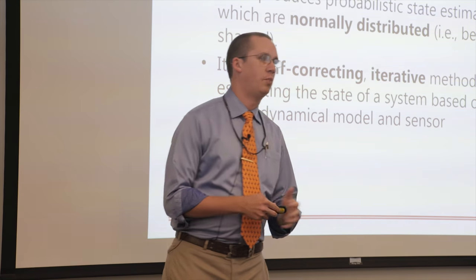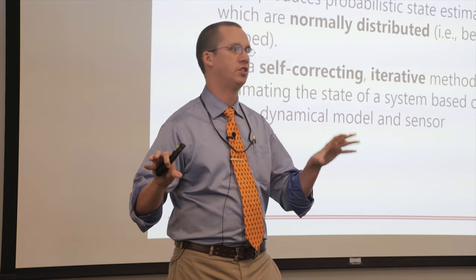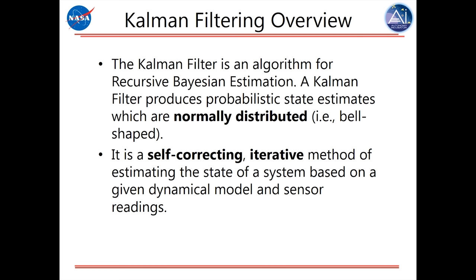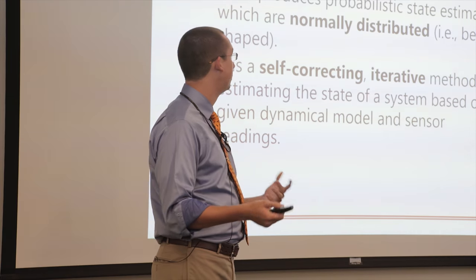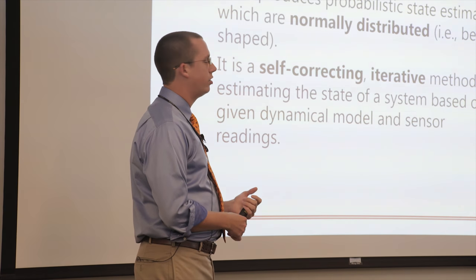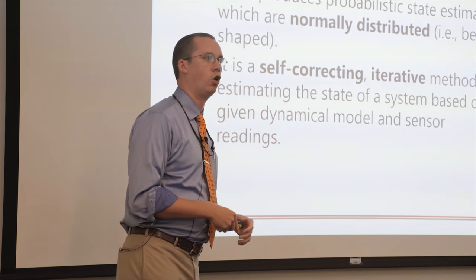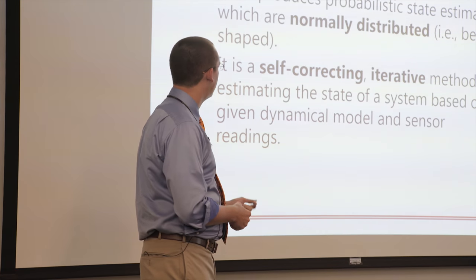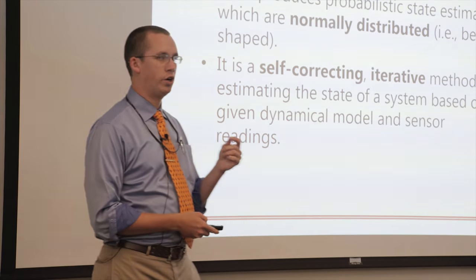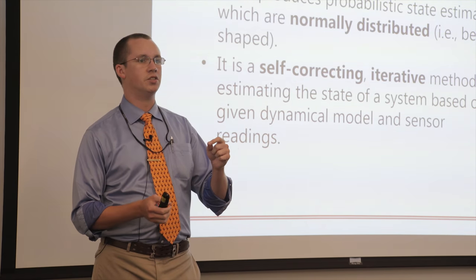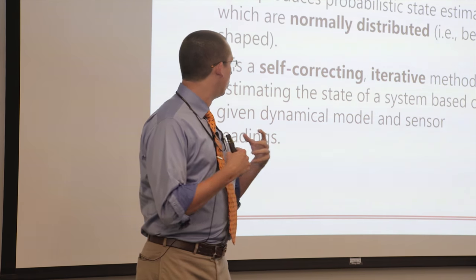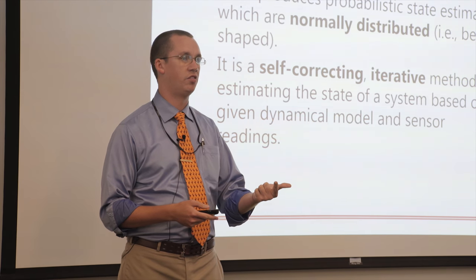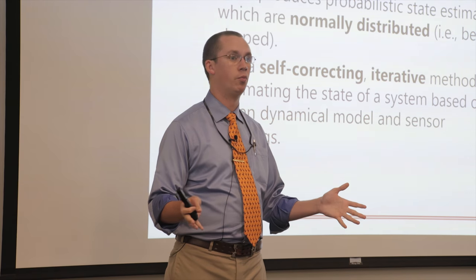Kalman filtering. I mentioned Kalman filtering earlier. Kalman filtering is my chosen method of fusing the information coming from the IMU with the pose estimates coming from the SLAM algorithm. A Kalman filter is an algorithm for recursive Bayesian estimation. That's a really fancy way of saying that it produces probabilistic estimates of the state of a system. A Kalman filter assumes that everything is normally distributed, i.e. bell curve shaped. Everything is Gaussian in Kalman filter land. Everything is also fundamentally linear in Kalman filter land. It is a self-correcting iterative method of estimating the state of a system. The requirements for putting together a Kalman filter are a dynamical model for whatever it is that you're trying to filter, and you also need to be able to have sensor readings.